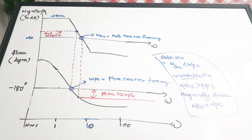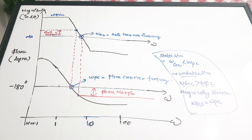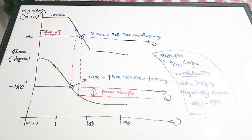This completes the Bode plot theory. In upcoming videos we will do examples of Bode plots, where you will get a clearer picture of how to analyze stability, draw magnitude and phase plots, and extract the crossover frequencies. If you found this helpful, please give it a thumbs up, share it with your friends, and subscribe to the channel. Thanks for watching!